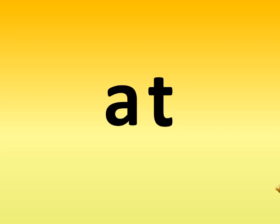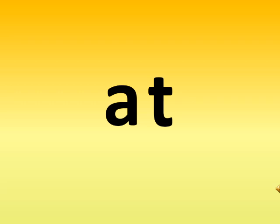A says ah and T says t. Now children, when A and T are joined together and next to each other, the sound that we get is AT. Whenever you see A and T together, you are going to read it as AT. You will not say 'actor' — you will say AT.